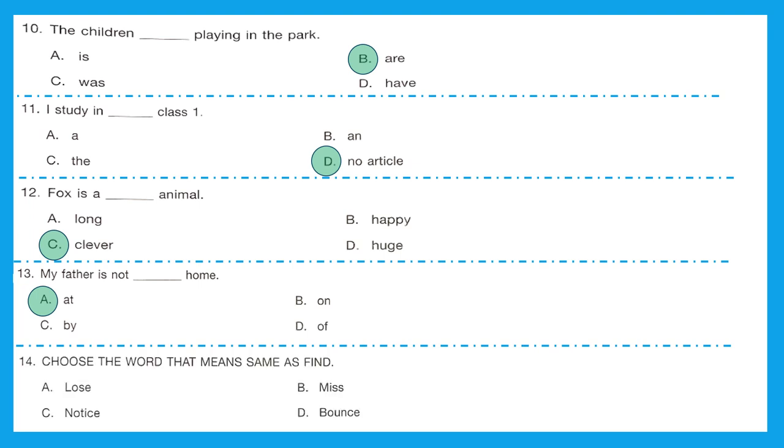Question 14, choose the word that means same as find. Is it lose? No, we are finding something. Is it miss? Again no. Is it notice? Yes, we notice something, we find something. It is not bounce. The correct meaning or similar meaning of find is notice. Option C is the right answer.